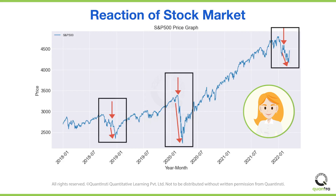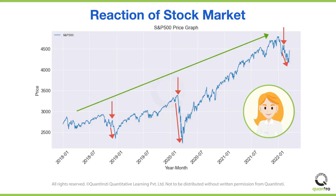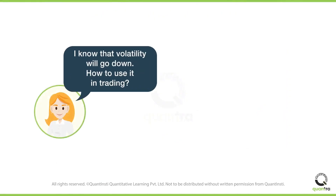This means that the volatility is relatively high during unexpected events. But over time the market sort of stabilizes, and the volatility goes down. Thus, Sophie knows that when an unexpected event takes place, the volatility increases sharply, but over time it goes down. She knows that the volatility is going to reduce, and she can benefit from taking a short position on volatility.